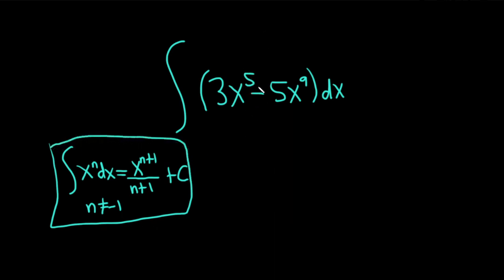In this problem, we're going to apply the power rule. The numbers in front of the x's are constants, so they just hang out. So it's 3 times - this is our n. We're going to add 1 to that. So 5 plus 1 is 6. This is x to the 6 over 6, and minus 5 times.